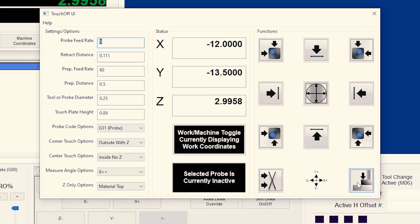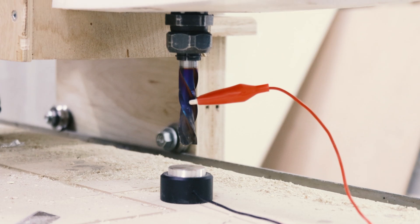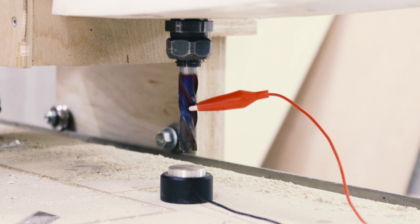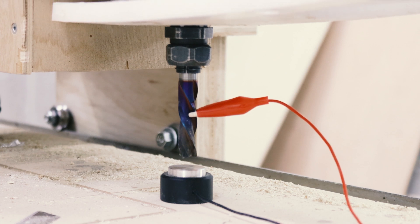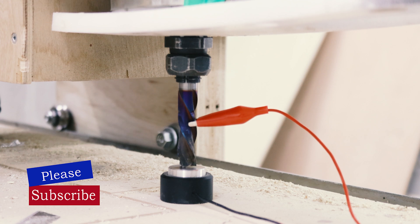Then we go over and we activate the probe. You can see the Z starts to go down. When it makes contact, it'll do the offset of 0.111 and go to one inch height.